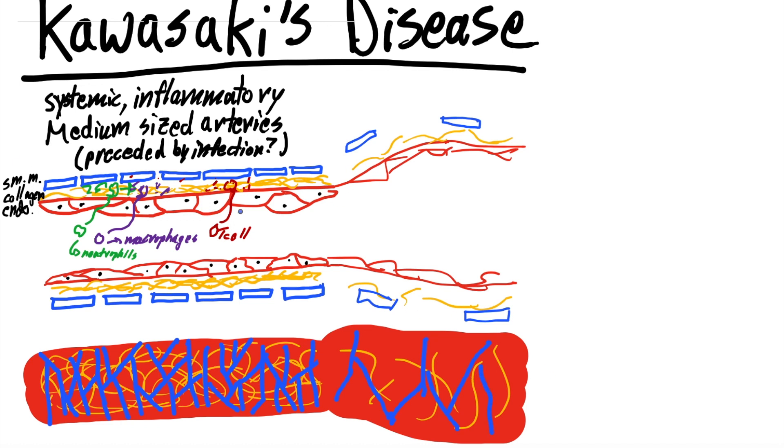One of the big deadly things that can happen is that you get dilation of these blood vessels that can cause aneurysms and rupture, specifically in the coronary arteries. That medium-sized artery inflammation can lead to aneurysms, specifically in the coronary arteries of the heart, which can lead to ruptures, heart failure, all sorts of bad stuff. That's one of the main textbook complications of Kawasaki's: coronary artery aneurysms. And that is the pathology, the mechanism that leads to that.